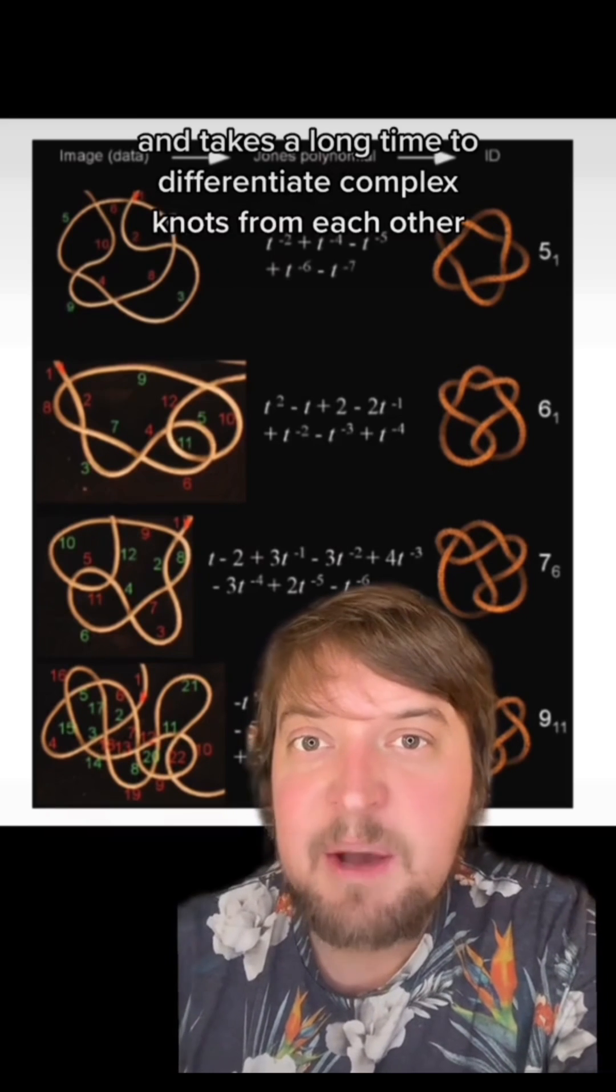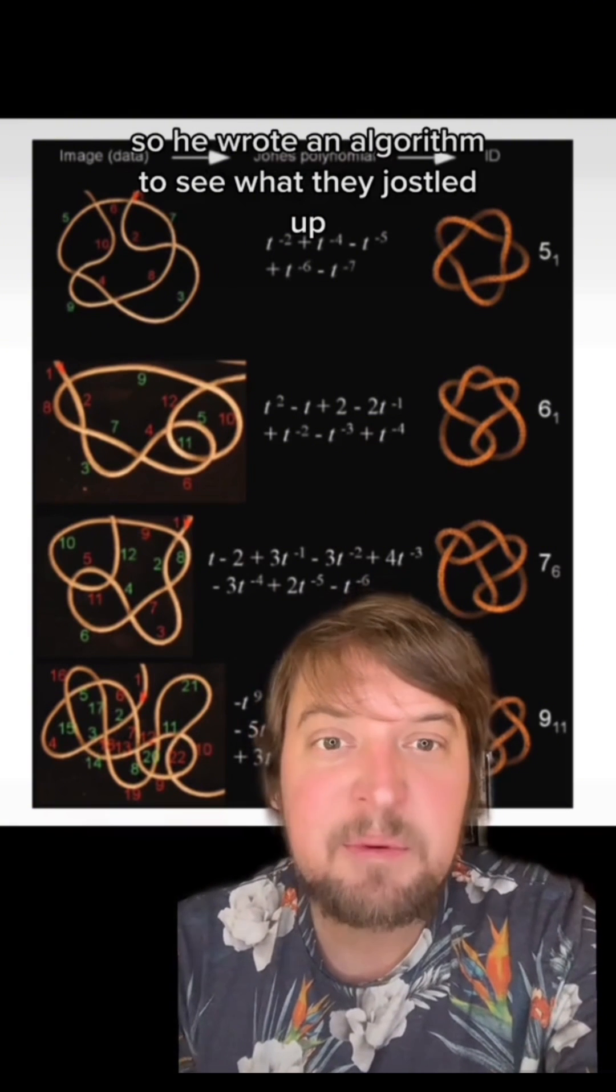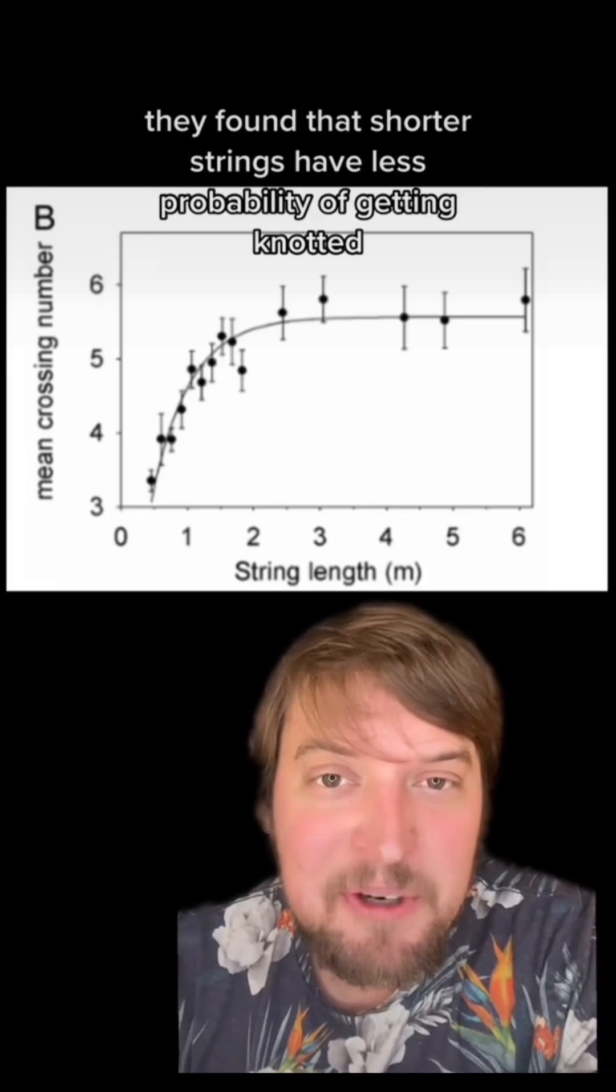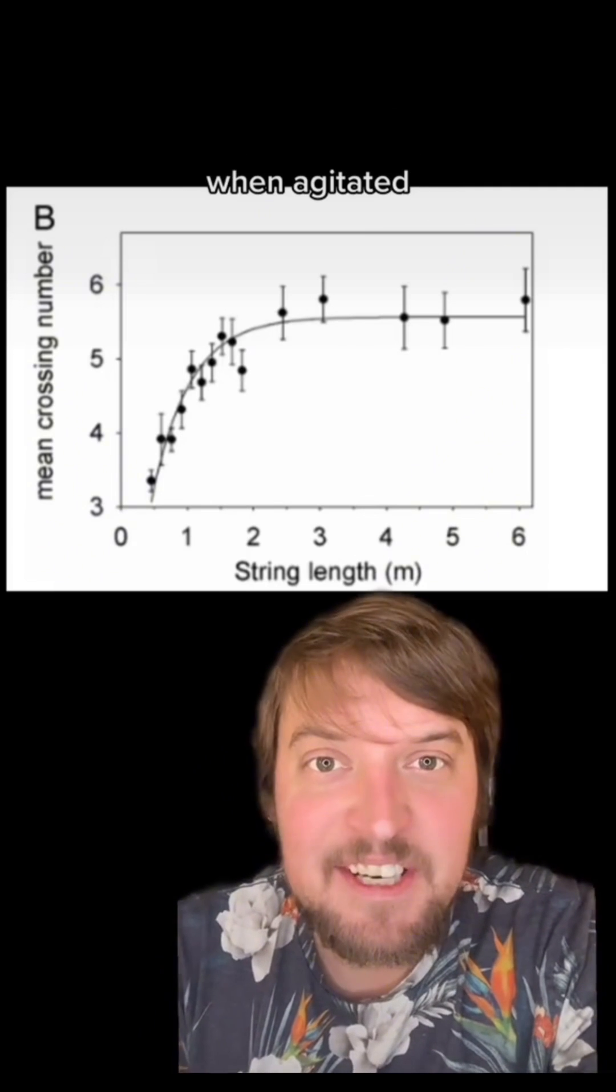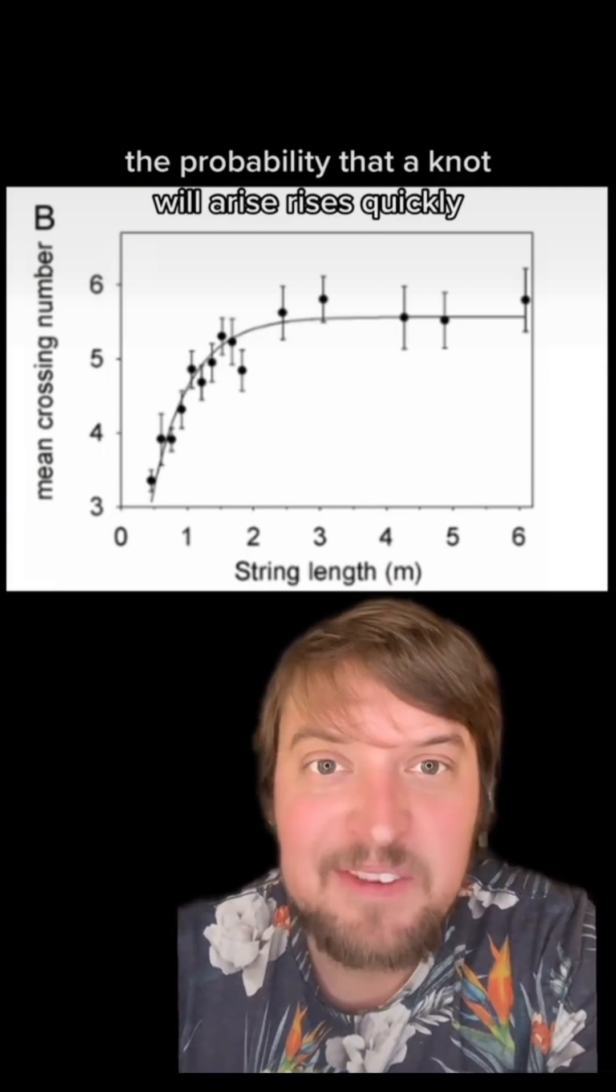It's super hard and takes a long time to differentiate complex knots from each other, so he wrote an algorithm to see what they jostled up. They found that shorter strings have less probability of getting knotted when agitated. But after a critical length, the probability that a knot will arise rises quickly.